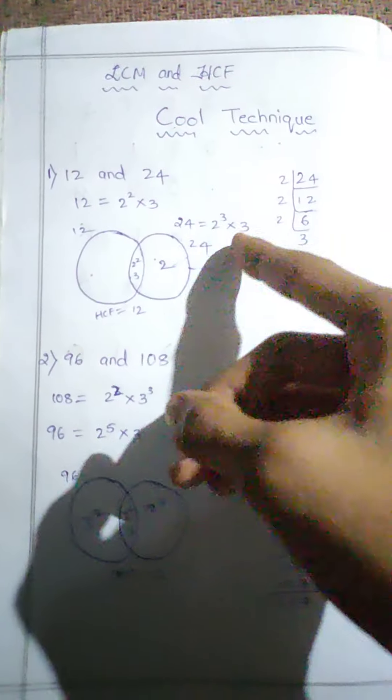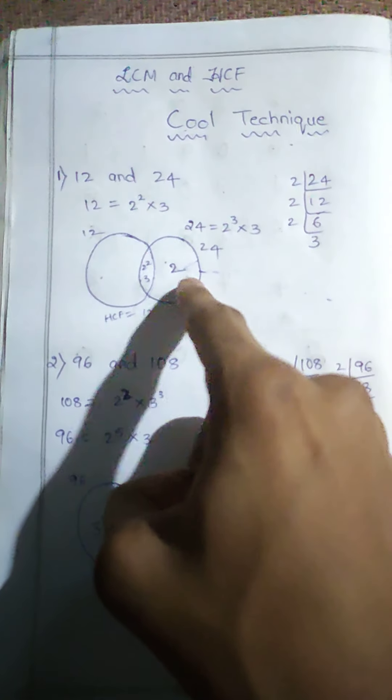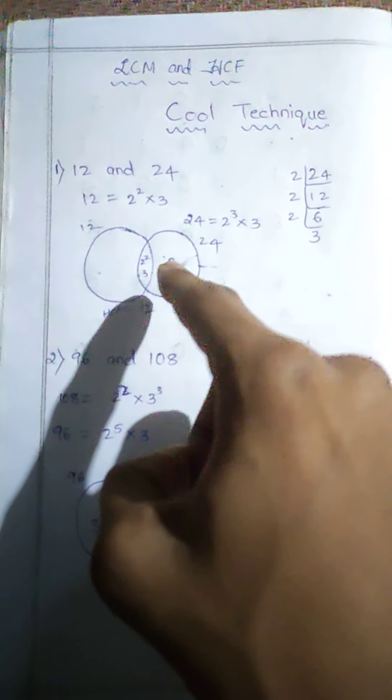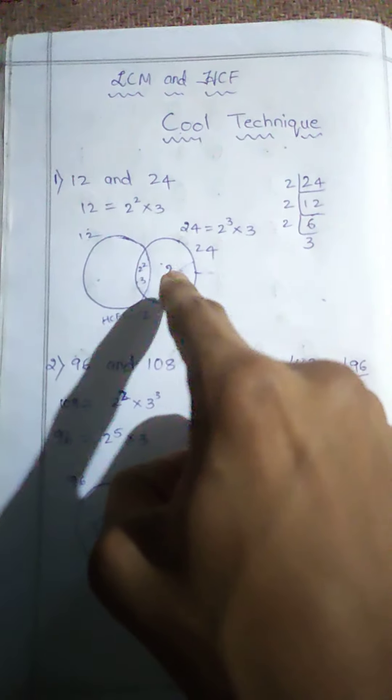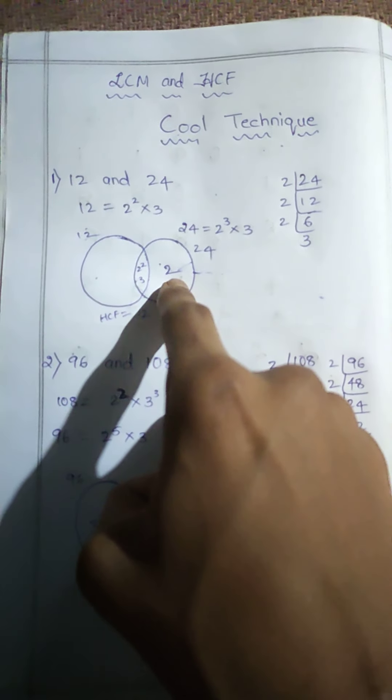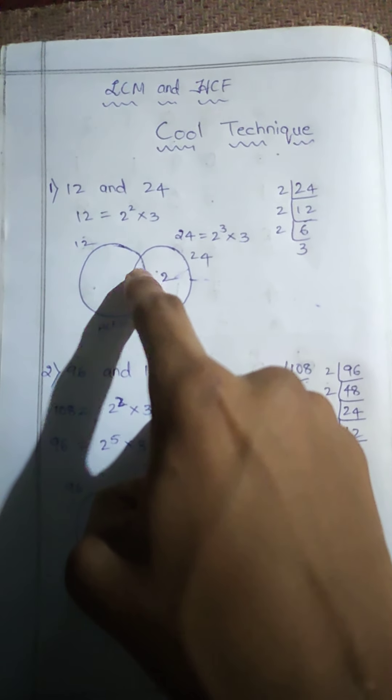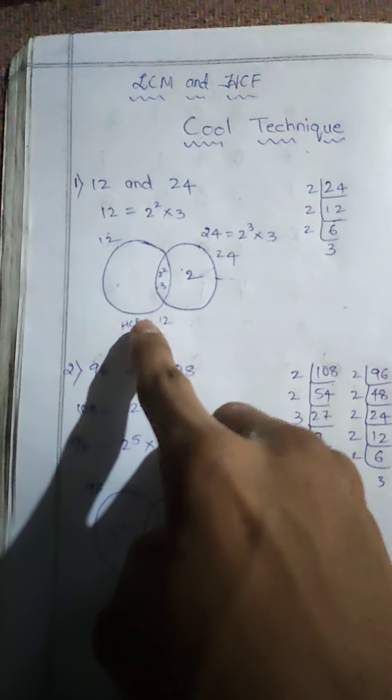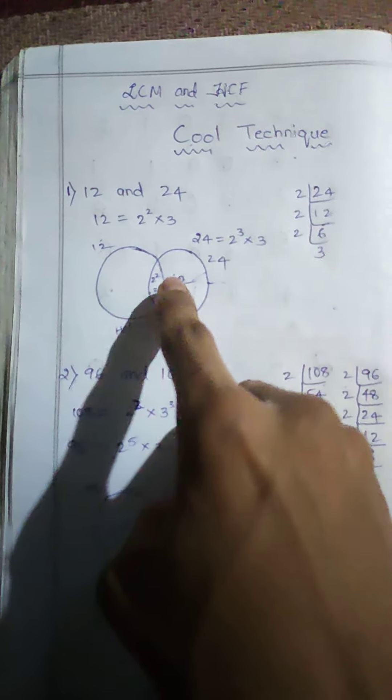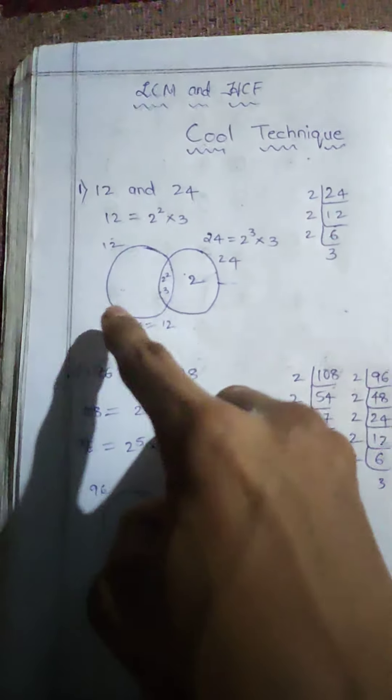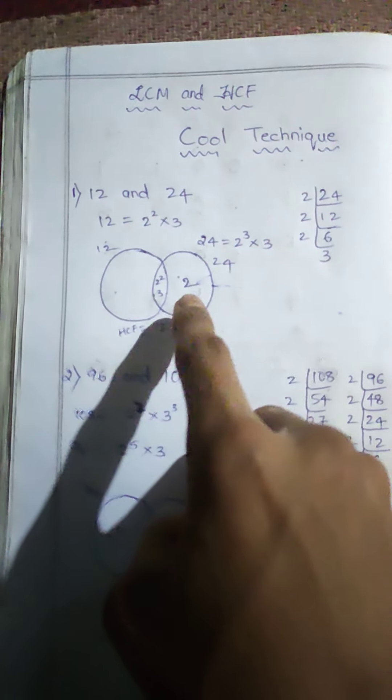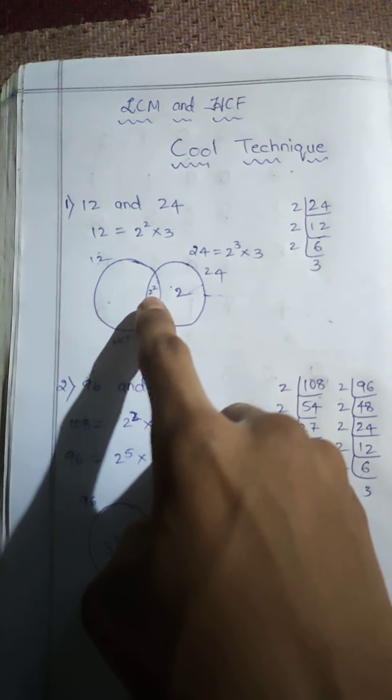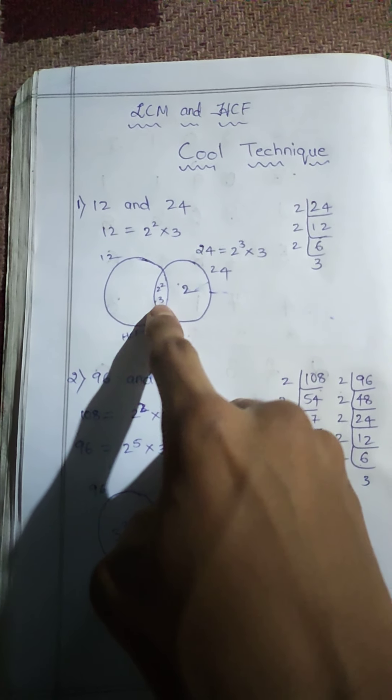After writing the common numbers, write what's left in each column. Multiply the middle common numbers to get HCF. Multiply all numbers to get LCM. Here, LCM is 2 squared, 4 into 3, 12 into 4, LCM is 24.